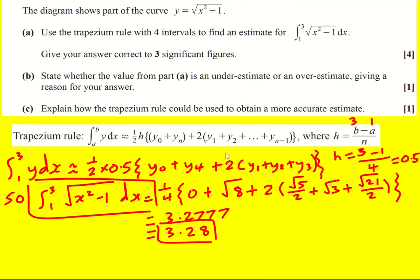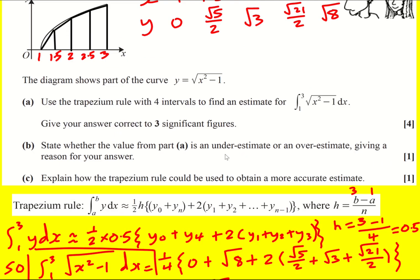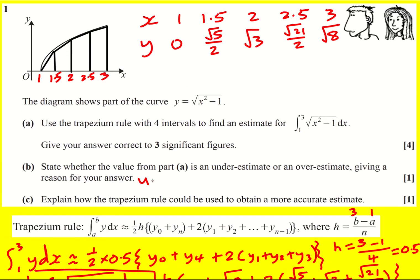You can see when you draw the trapezia on, and I would recommend you do this, like there's these little bits that we're not actually counting. They're the bits that are missed. So you could say the trapezia are underneath the curve, or you could say that the curve is concave, which means the gradient itself is decreasing.